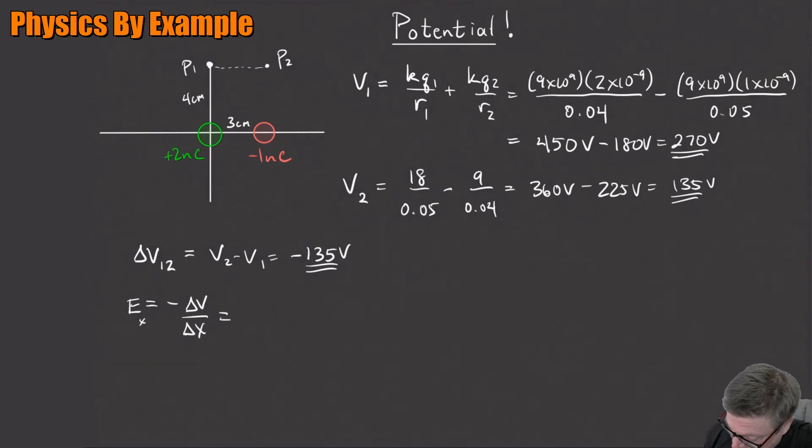So what's the electric field? If I know the voltages at P1 and P2, I can figure out what the electric field, the average electric field between those two points is. Because that's just going to be minus delta V. Well, that's just going to be minus a minus 135. Already figured out delta V. Divided by delta x. What's delta x?